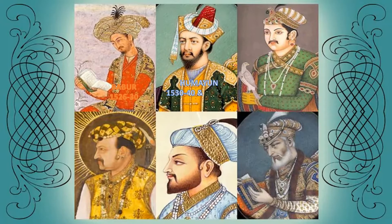After Babur, his son Humayun became the emperor, who ruled from 1530 to 1540, and again from 1555 to 1556. He was badly defeated by Sher Shah, an Afghan ruler, in the year 1540 at the Battle of Kanauj. He lost the empire and went to the Safavid Empire, where he took asylum. Later, once again in 1555, he reoccupied and reestablished the Mughal Empire by defeating Sher Shah's descendants.